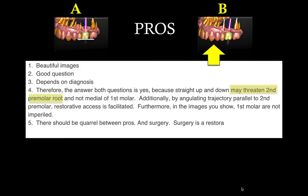Another prosthodontist chose option B because placing the implant straight up and down — perpendicular — may jeopardize the root of the premolar. His preference is to angulate the implant parallel with the roots for safety reasons. He also mentioned that restorative access is facilitated. So we have to consider not just safety but also the restoration.